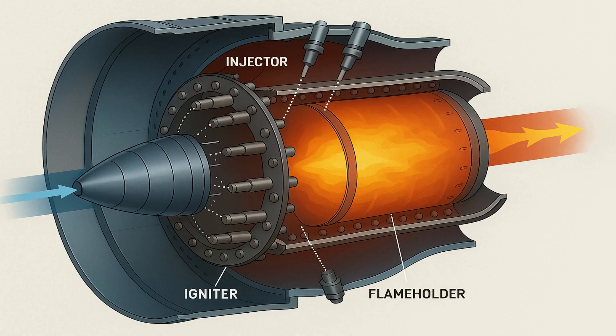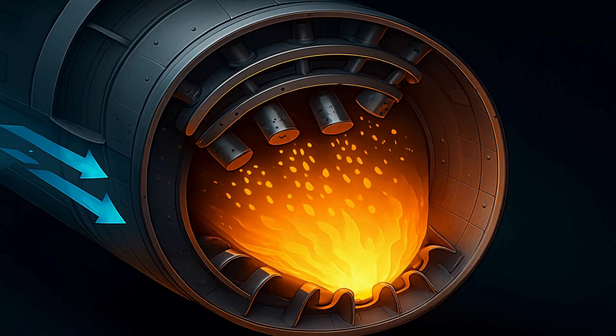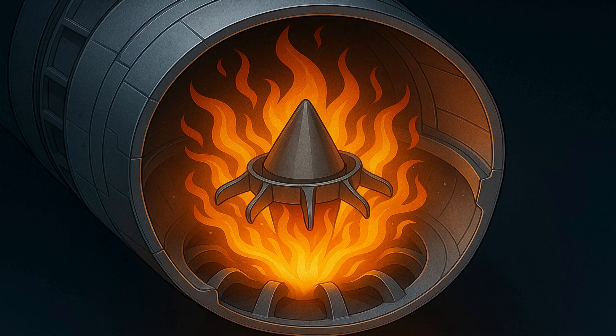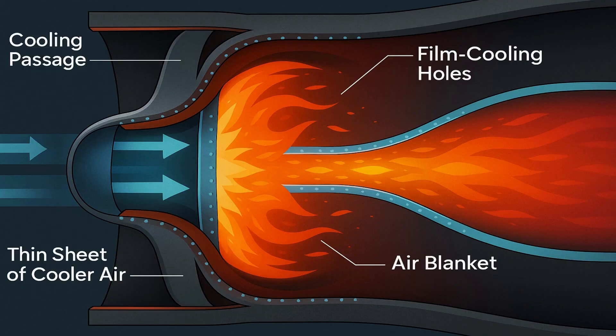Once the air reaches peak pressure, it enters the combustion chamber — a robust steel shell lined with cooling passages and thermal coatings. Fuel injectors evenly spray a fine mist of jet fuel into the compressed air. Igniters spark the mixture, and a stable ring of flame holders keeps the fire lit, even as gas rushes through at high speed. Temperatures soar past 2,000 degrees Fahrenheit, far hotter than most metals can withstand. To protect the chamber walls, a thin sheet of cooler air bleeds through tiny holes, forming a barrier that insulates the metal from the heat.